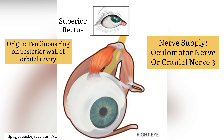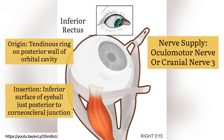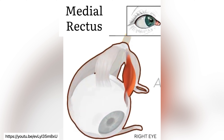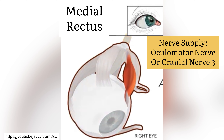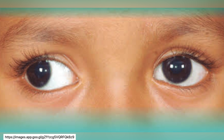For the extraocular muscles, the superior rectus muscle raises the cornea upward and medially. It is supplied by the oculomotor nerve and has the following origin and insertion. The inferior rectus muscle depresses the cornea downward and medially, which is also innervated by the oculomotor nerve. It has the following origin and insertion.